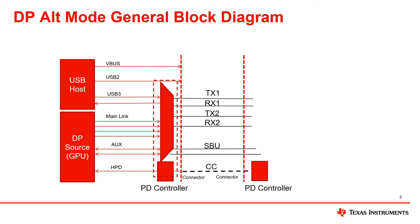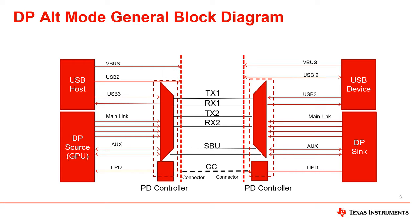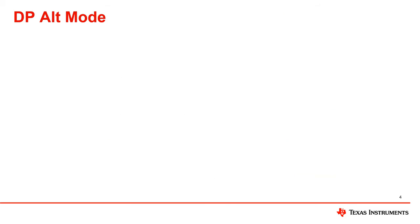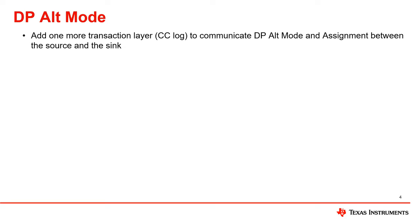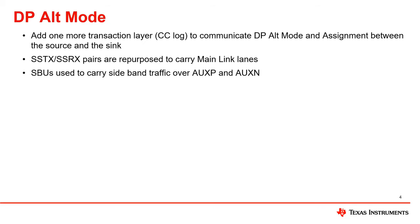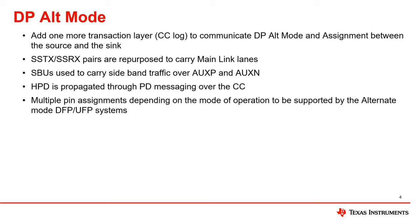On the sink side, we also have a PD controller that will negotiate with the PD controller on the source side over the CC bus to support DP alt mode implementation. On the sink side, the MUX will take the four high-speed lanes from the USB-C connectors as input and then distribute the signal to the correct USB or DP sink. The key highlights of a DP alt mode implementation are: an added transaction layer — the CC logic — to communicate USB-C orientation, DP alt mode, and assignment between the source and the sink. USB-C transmitter and receiver pairs are repurposed to carry main link lanes. SBUs are used to carry sideband traffic over the aux positive and aux negative lanes. HPD is propagated through PD messaging over the CC lane. And multiple pin assignments, depending on the mode of operation, support downstream facing port or upstream facing port systems.